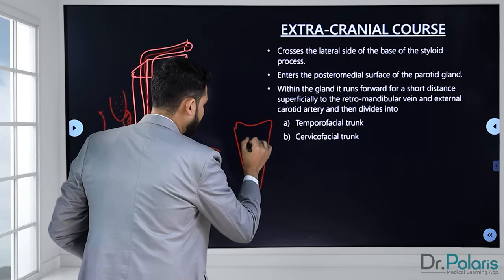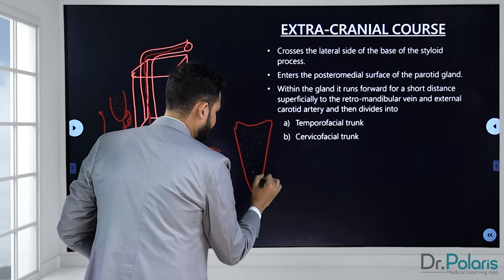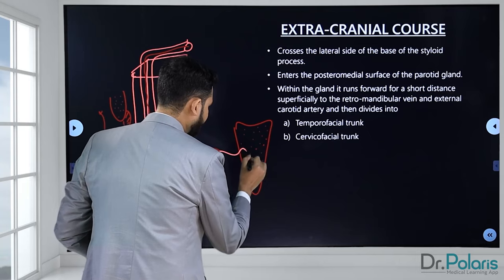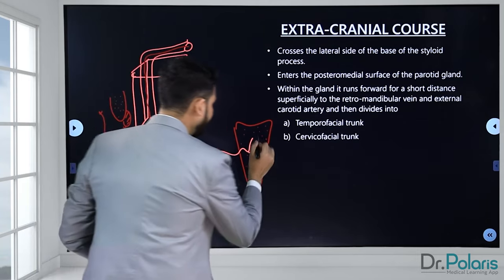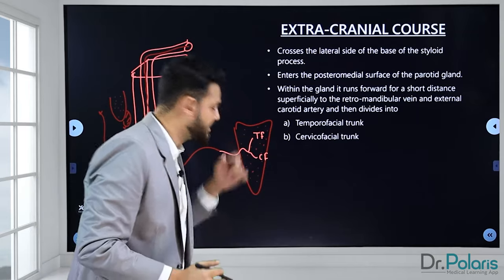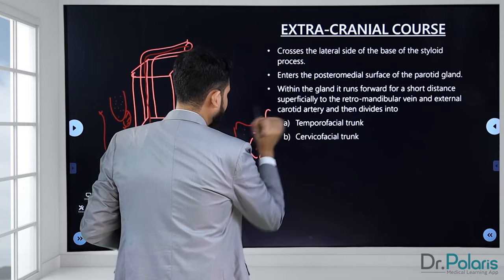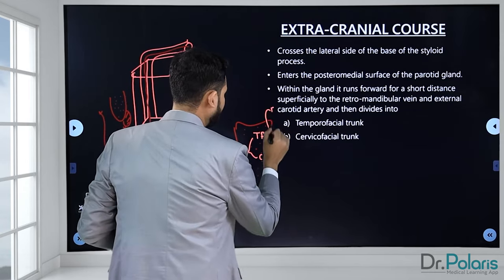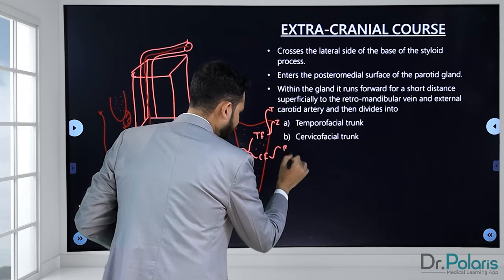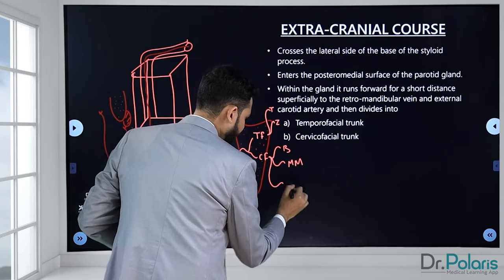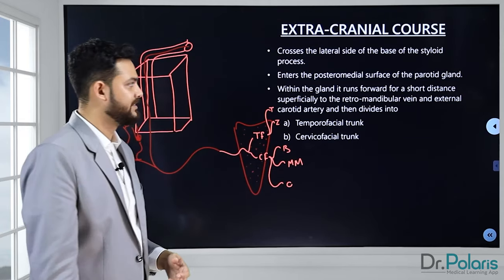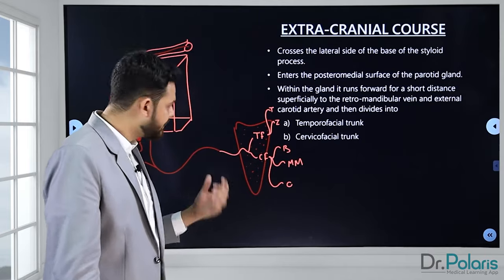After giving these branches, the facial nerve enters the parotid gland and divides into two major trunks: the temporofacial trunk and the cervicofacial trunk. The upper temporofacial trunk gives off the upper branches — temporal and zygomatic. The lower cervicofacial trunk gives off the lower three branches — buccal, marginal mandibular, and cervical. These are the five terminal branches.